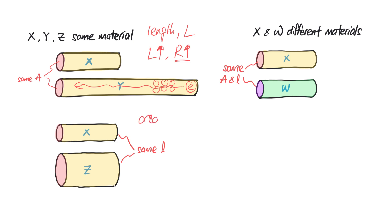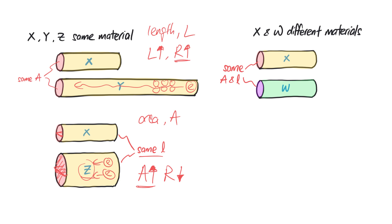Next, let's talk about the cross-sectional area A. Conductors X and Z have the same length, but Z has a bigger cross-sectional area. With a bigger cross-sectional area, more electrons are able to flow through easily — it's like a bigger pipe, so water flow will be higher. So the greater the cross-sectional area, the lower the resistance. Another analogy: think of a tunnel — a single lane versus a bigger tunnel with three lanes — obviously less traffic jam for the bigger tunnel Z. So the bigger the cross-sectional area, the lower the resistance.